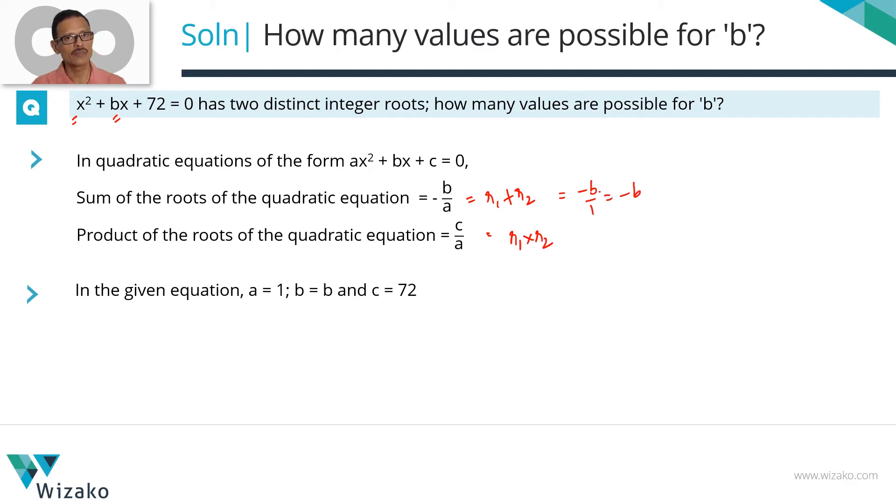Let's plug in what these values would be. r1 plus r2 is minus b by a, which is minus b by 1, equal to minus b. Product of the roots r1 into r2 equals c by a, which is 72 by 1, equal to 72. So r1 plus r2 equals minus b. What are we trying to find? We're trying to find values for b, so b will equal minus of r1 plus r2. Using the information that r1 into r2 equals 72, let's find what possible values r1 and r2 can take so that we get a product of 72.